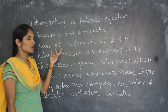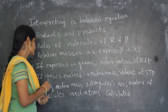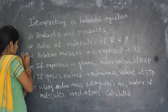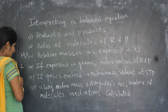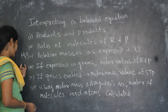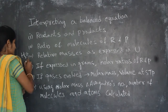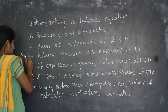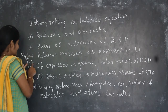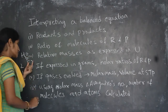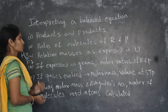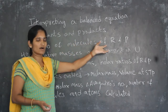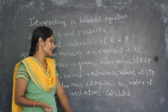The ratio of molecules means, for example, if you take H₂O, here hydrogens are 2 and oxygen is 1. So this is the ratio — for 1 oxygen atom we have 2 hydrogen atoms. So from a balanced equation we can find out the ratio of molecules of reactants and products.